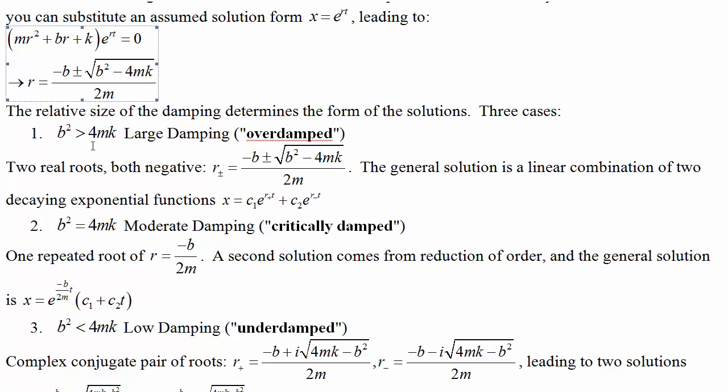Depending on the sign of this term under the root, we have three different cases. If b squared is bigger than 4mk, then we have two real roots. The general solution is of this exponential form, where both the coefficients of the t are real.